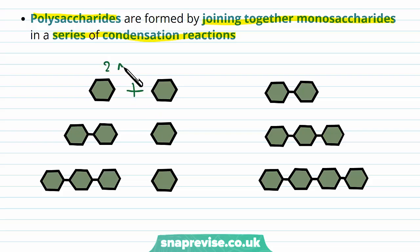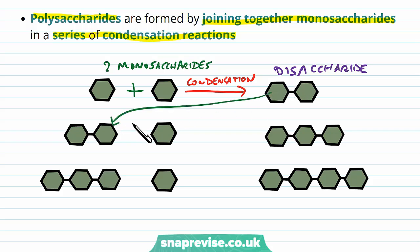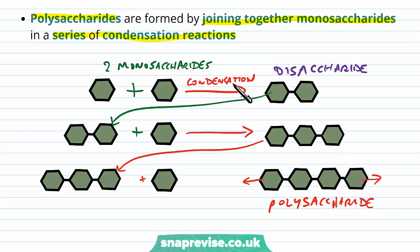We might start off with two monosaccharides, and as they come together and are joined by a condensation reaction, we end up with two monosaccharides joined into one unit called a disaccharide. To increase the length of this chain, we simply add another monosaccharide — a condensation reaction adds this extra monosaccharide to form a trisaccharide or oligosaccharide. This can keep growing with more and more additions to form a polysaccharide, with each addition being a condensation reaction.